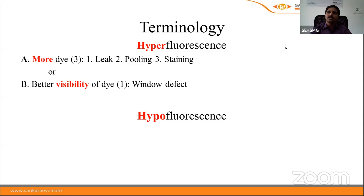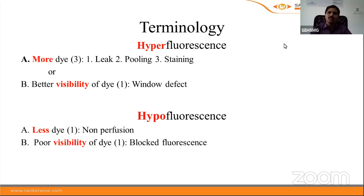Hyperfluorescence can be due to the presence of more dye — when the tissue has a higher concentration of dye, classified as leak, pooling, or staining — or it can be due to better visibility of normal dye concentration, called a window defect. Hypofluorescence can be due to lesser concentration of dye in tissue, known as non-perfusion or vascular filling defect, or poor visibility of the dye, called block fluorescence.